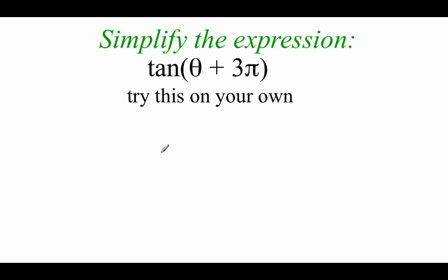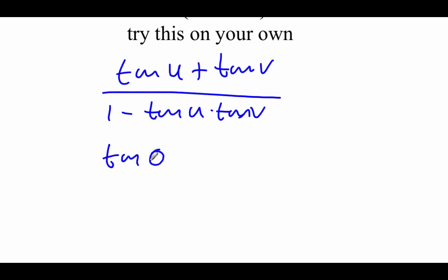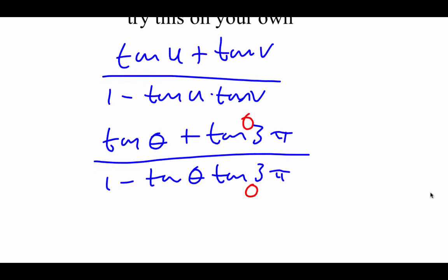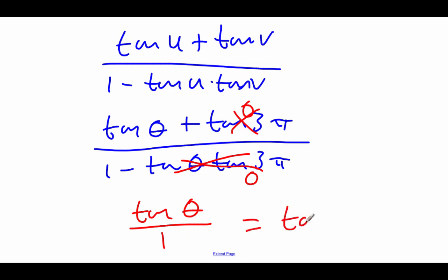You can pause the video and try this one on your own, or just follow along. I see a tangent sum, so our formula goes tangent of U plus tangent of V all over 1 minus tangent of U times tangent of V. Plugging in values: tangent of theta plus tangent of 3 pi, all over 1 minus tangent of theta times tangent of 3 pi. The tangent of 3 pi is 0, so on top, tangent of theta plus 0 is just tangent of theta. On bottom, 1 minus 0 is 1, and tangent of theta divided by 1 is just tangent of theta.